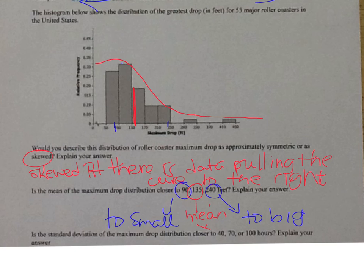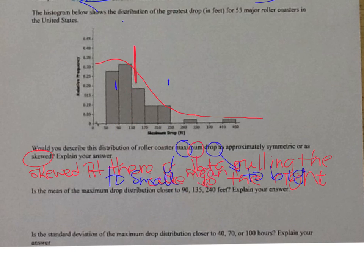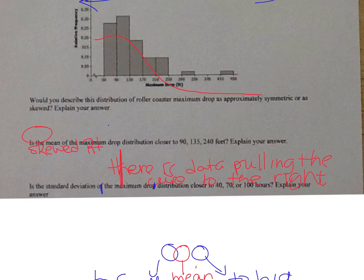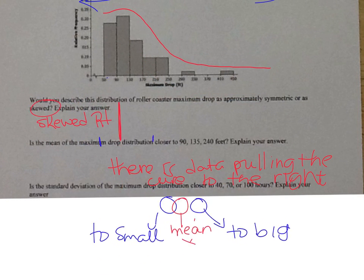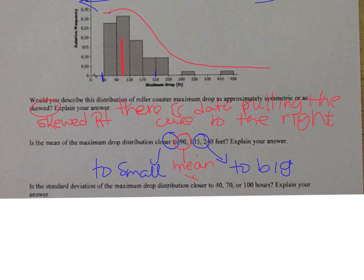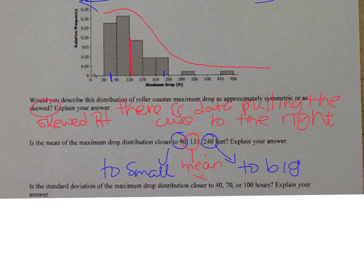And the last thing says, and this is good for your explanation that this is too small and this is too big. Is the standard deviation of the maximum drops distribution closer to 40, 70, or 100 hours? Explain your answers. Well, look at the spread here.